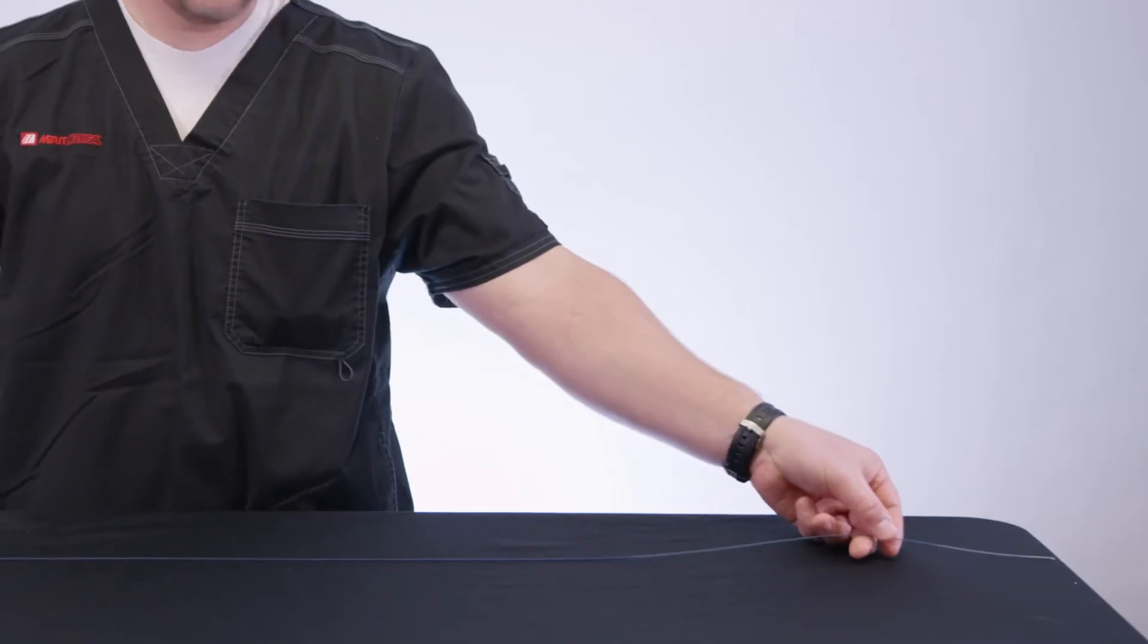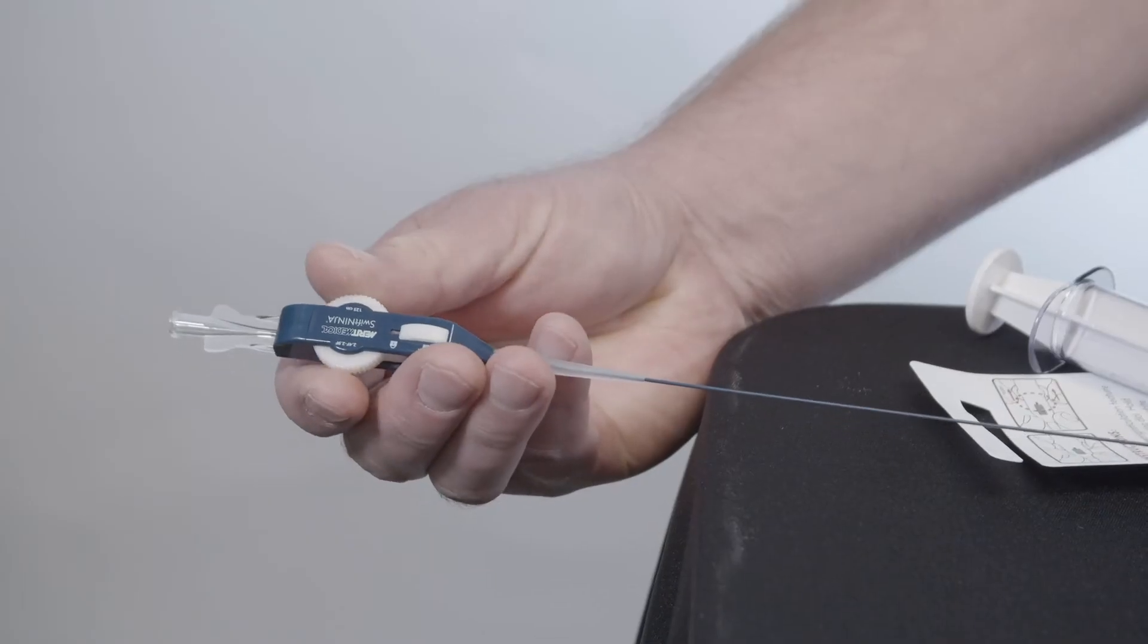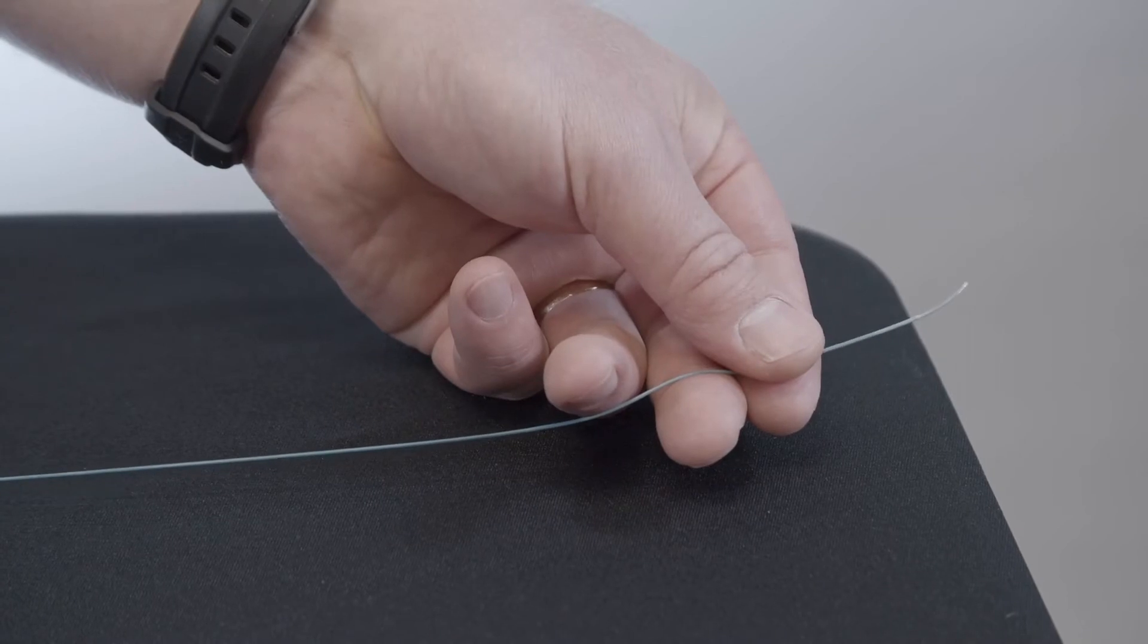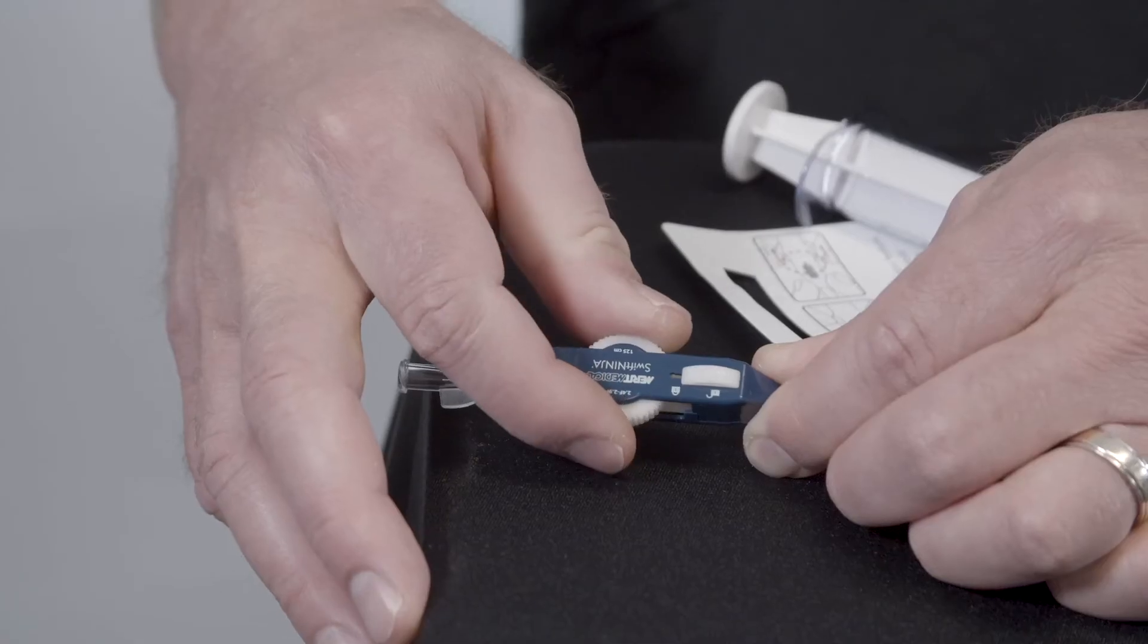With the catheter straight, gently hold the Swift Ninja near the tip of the catheter in one hand and rotate the steering dial in both directions to ensure the steerable tip rotates in both directions. A tension limiter is built into the steering dial to prevent the articulation wires from being broken. When the steering dial is rotated too far, the steering dial will spin freely and will make a clicking noise.